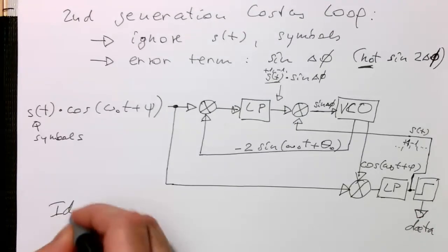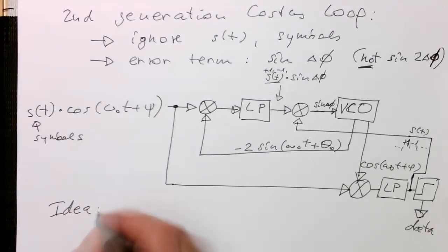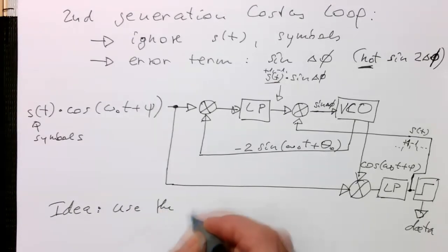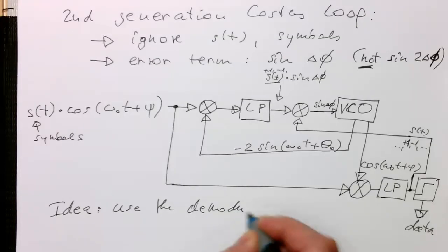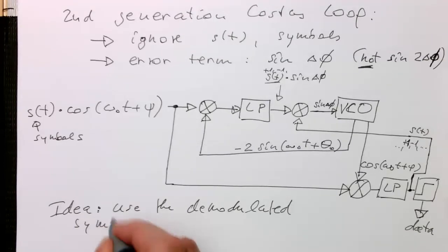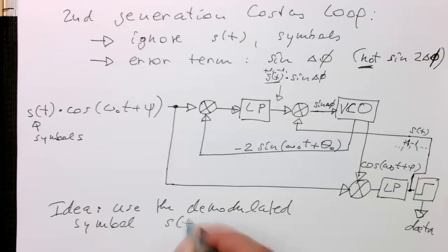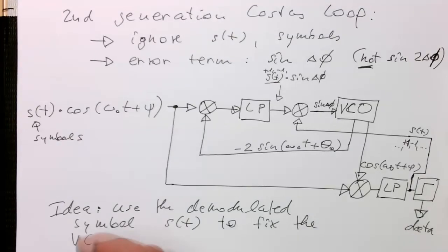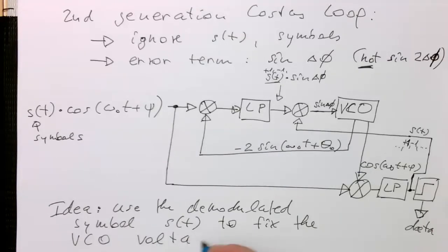So the idea is very simple. We just use our demodulated signal itself, our S of T, what we get out of our demodulator anyway, and use that to eliminate these phase shifts introduced by the symbols themselves. So we fix basically the whole VCO loop by the demodulated symbols themselves.